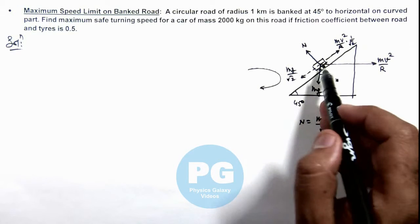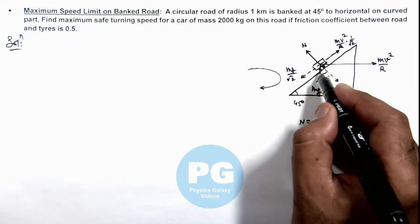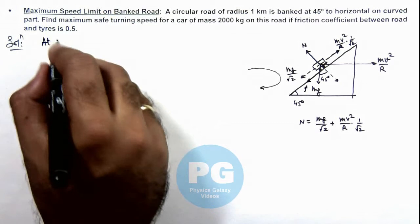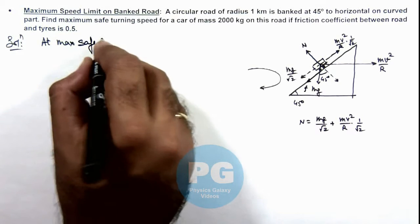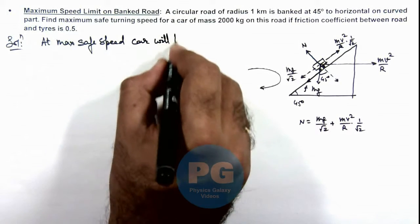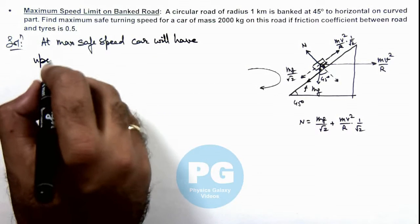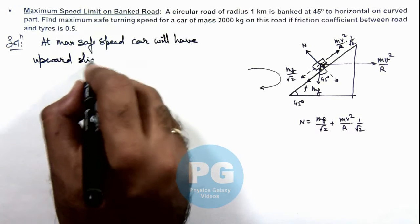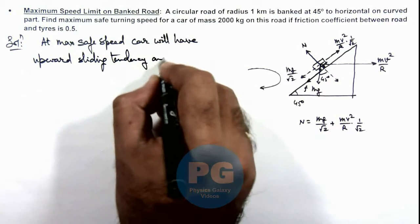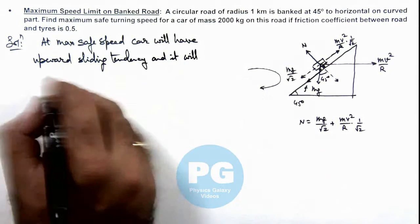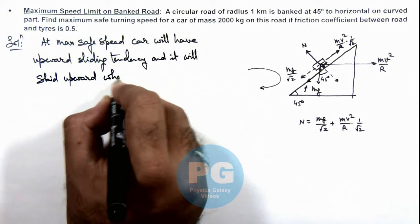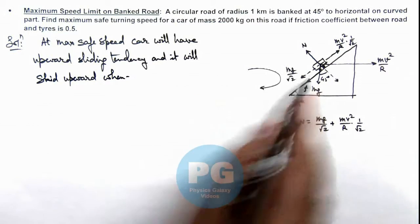And for maximum speed it'll have a tendency to move out so friction will act on the tires in downward direction. So here we can write at maximum safe speed, car will have upward sliding tendency and it will skid upward when the upward force will exceed the limiting friction.